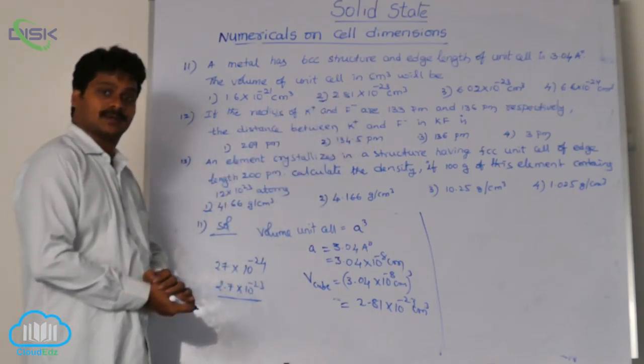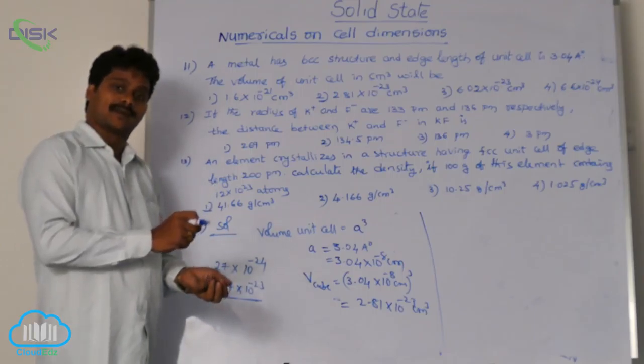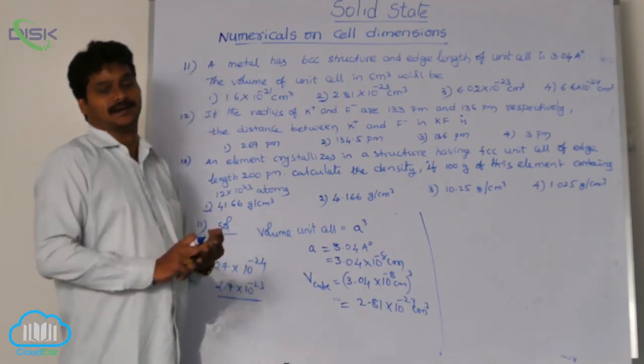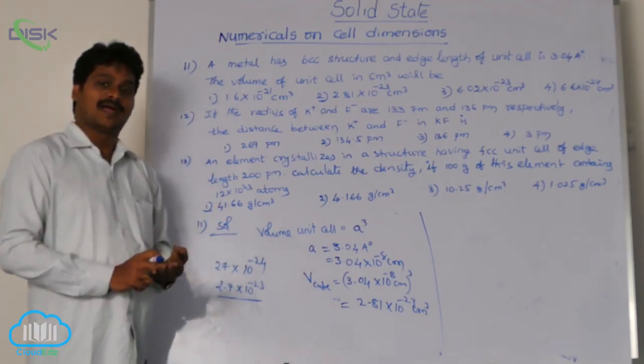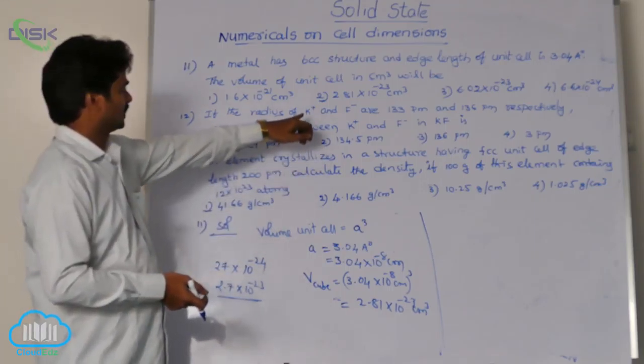You know, sodium chloride, potassium, all fluorides of sodium, potassium, rubidium, they have FCC lattice. So here, for 12th question, see the solution.